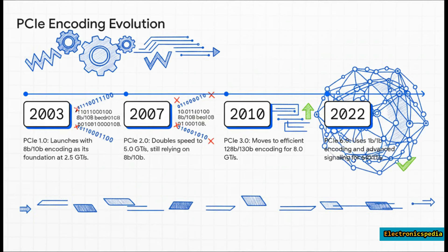You can see just how critical this was on the PCI Express timeline. 8B/10B was the absolute bedrock for PCIe 1.0 and 2.0. But as we got faster and faster, that 20% overhead started to feel pretty heavy — it became too expensive. So by the time we got to PCIe 3.0, the industry made the jump to a way more efficient 128B/130B scheme. And now look at PCIe 6.0 — we're at something called 1B/1B encoding, which is insane, but it needs way more complicated tech to solve the same problems that 8B/10B handled so elegantly with just math.